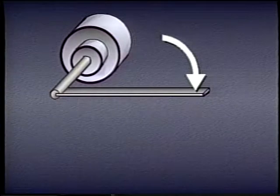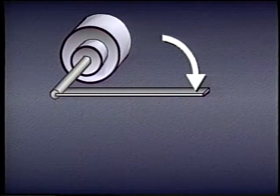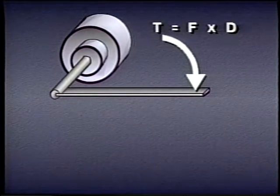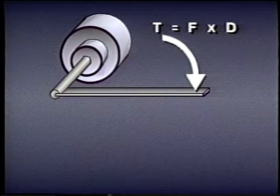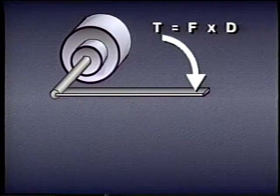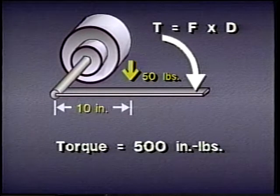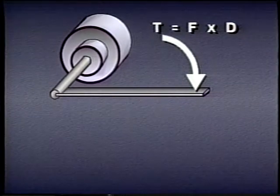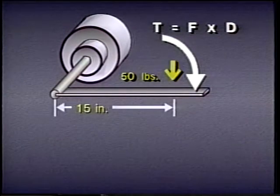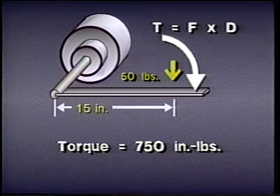Force in a rotary actuator is a little different than force in a linear actuator — in fact, the word force is not even used. Instead, we say torque, which means rotary force. How much torque is created depends on how far the force is applied from the shaft of the actuator. If a force of 50 pounds is applied 10 inches from a pivot point, 500 inch-pounds of torque will be generated. If the same 50 pounds is applied 15 inches from the pivot, 750 inch-pounds of torque will be generated.